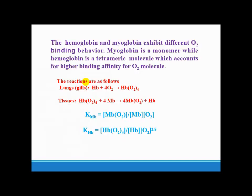The hemoglobin and myoglobin exhibit different O2 binding behavior. Myoglobin is a monomer, while hemoglobin is a tetrameric molecule, which accounts for higher binding affinity for O2 molecules.